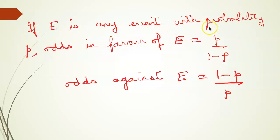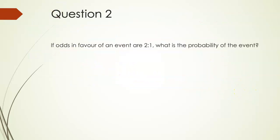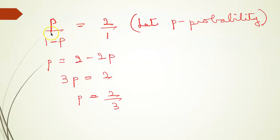If E is any event with probability P, odds in favor of E is P by 1 minus P and odds against E is 1 minus P by P — a formula we need to remember. So if odds in favor of an event are 2 is to 1, what is the probability? Using P by 1 minus P equals 2 by 1 and cross multiplying, we get P is 2 by 3.